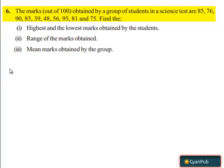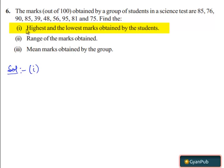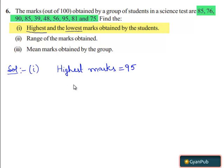Now let's move on to the solution. We move with the first part. In the first part, they have asked us to find out the highest and the lowest marks. When we observe from the above observations, we can find that the highest marks is 95 and the lowest marks is 39.